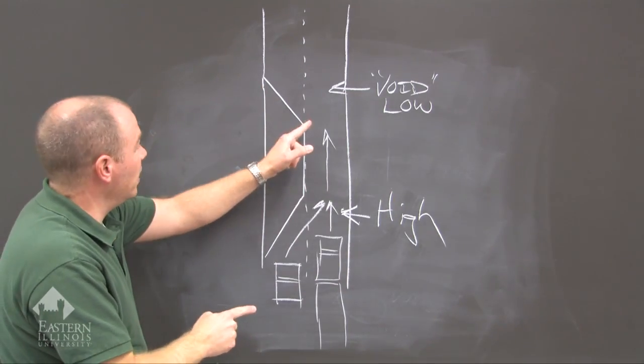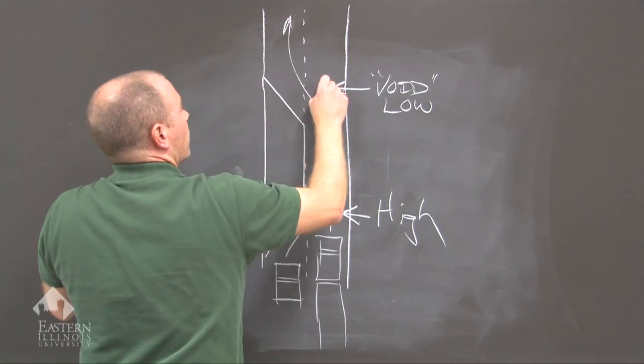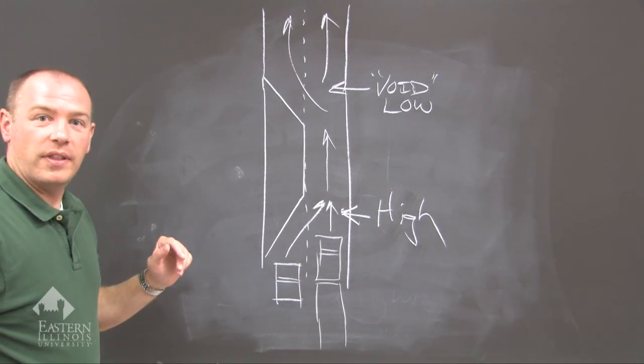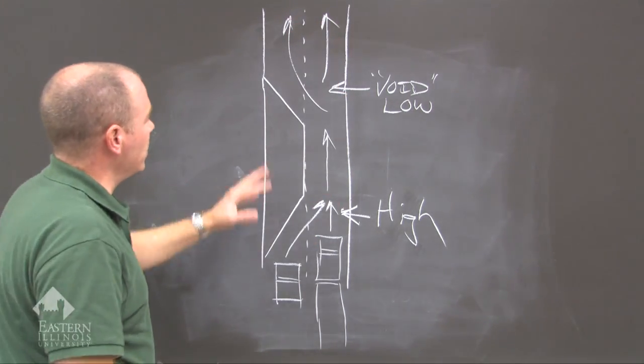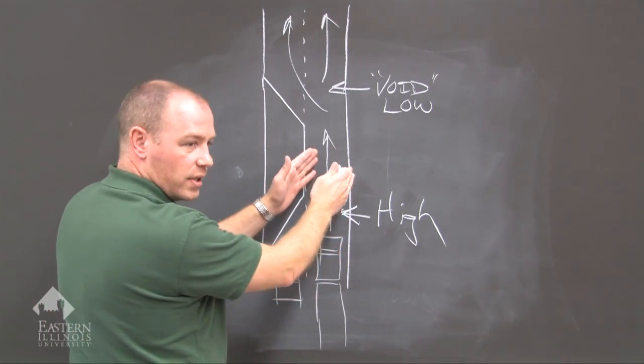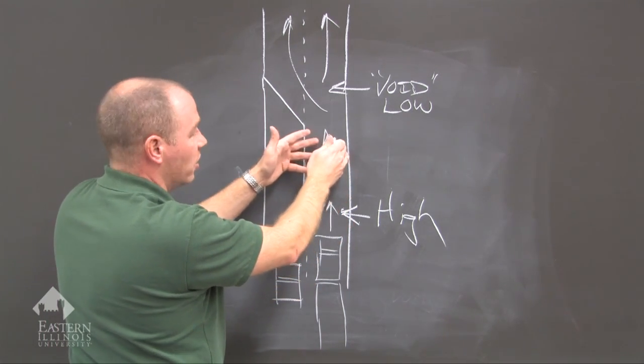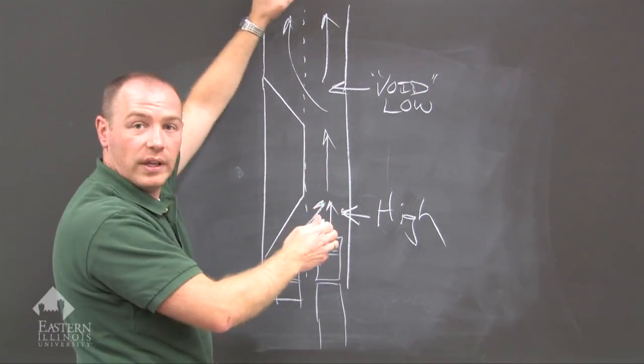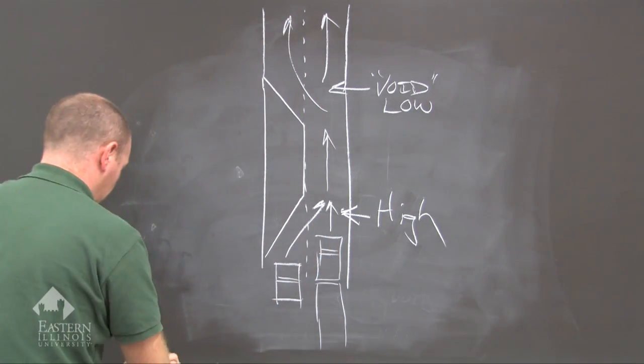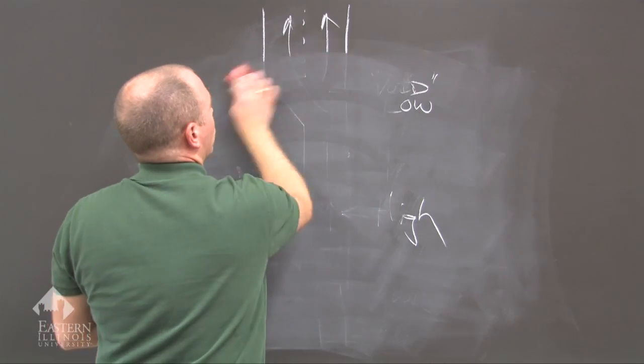Once people see that there's open space and there's no more construction, then they zip on out. So this is the same kind of situation. You've got high pressure here and it slowly moves. The air and the vehicles move slowly until they find the void, and then they go really fast. The same kind of thing. So we get an increase in speed toward the low pressure.